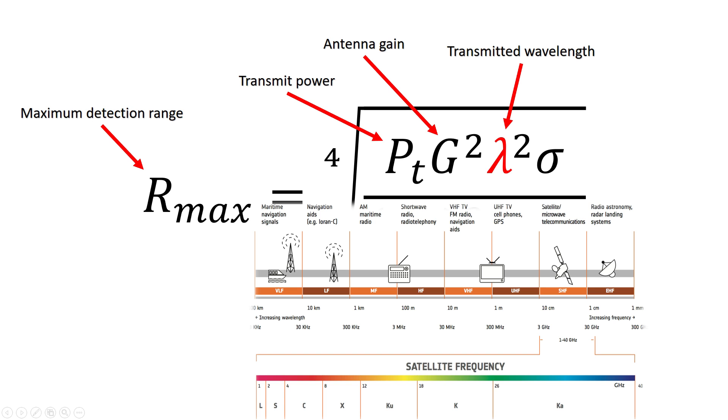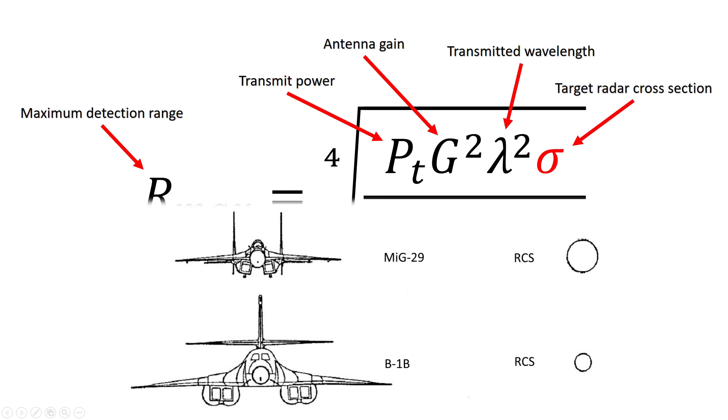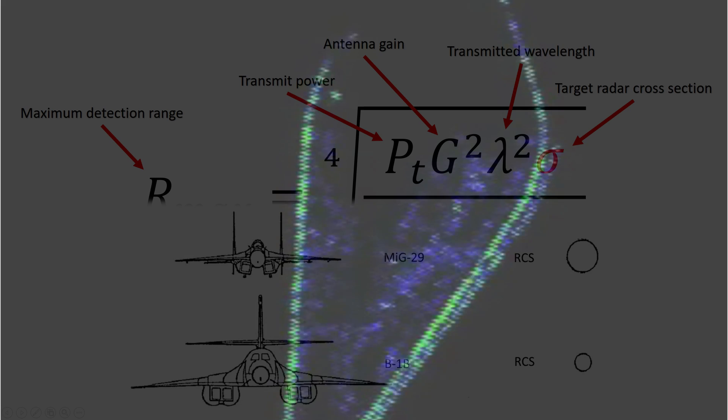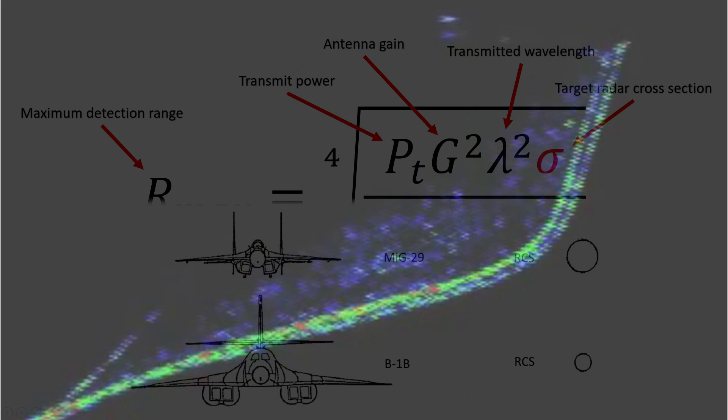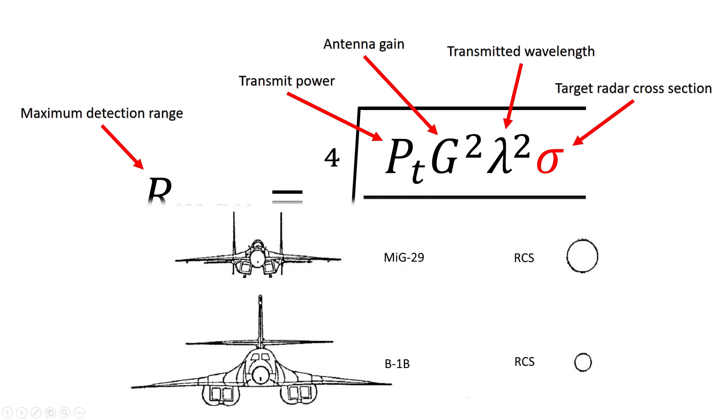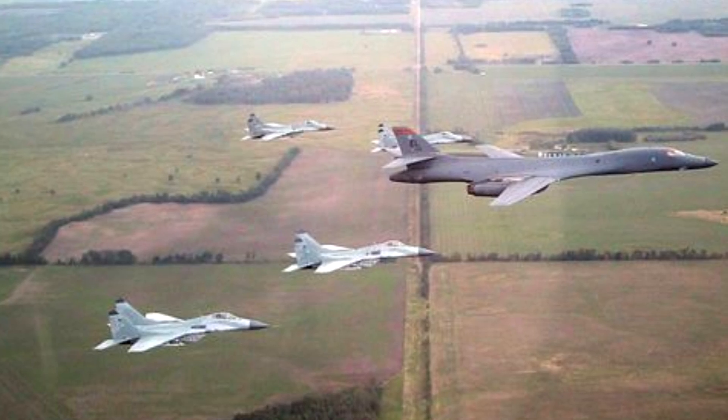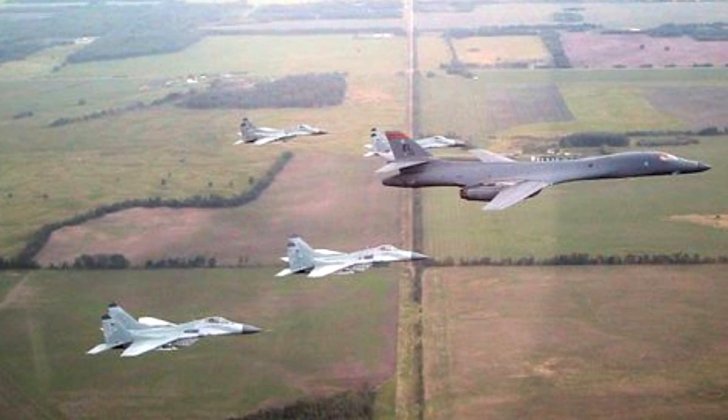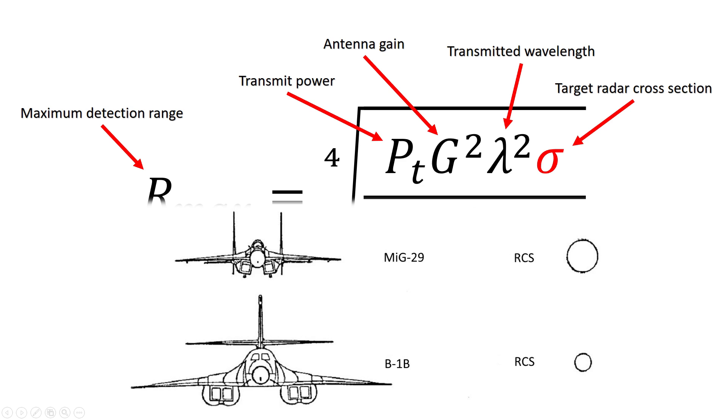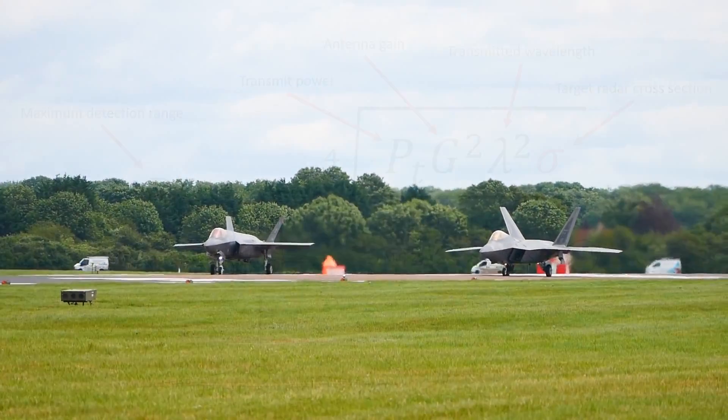The fourth factor is the radar cross-section or RCS of the object you're trying to detect. Target RCS is measured in square meters and is dependent on many different things such as the direction you look at the target from, the shaping of the target, and the use of radar absorbent materials. Case in point, the MiG-29 is a considerably smaller aircraft than the B-1 bomber in terms of mass and physical dimensions. However, from the front that same MiG-29 has a larger radar cross-section than the B-1B. Modern stealth aircraft like the F-22 and F-35 typically have RCS values which are orders of magnitude smaller than their fourth-gen predecessors.